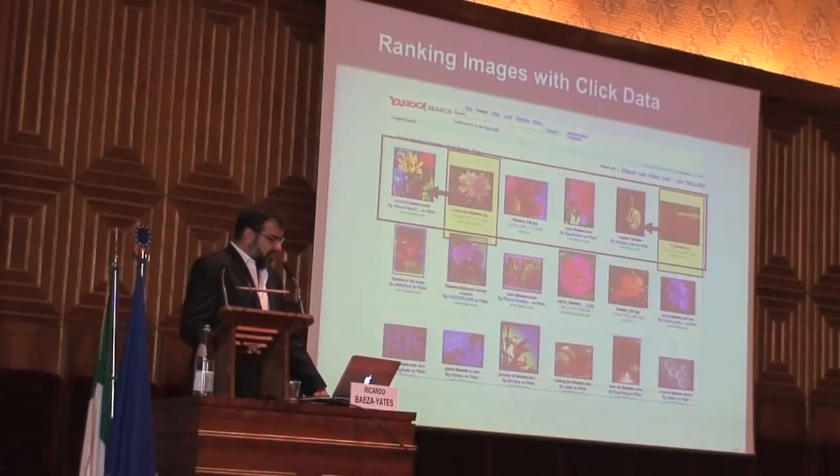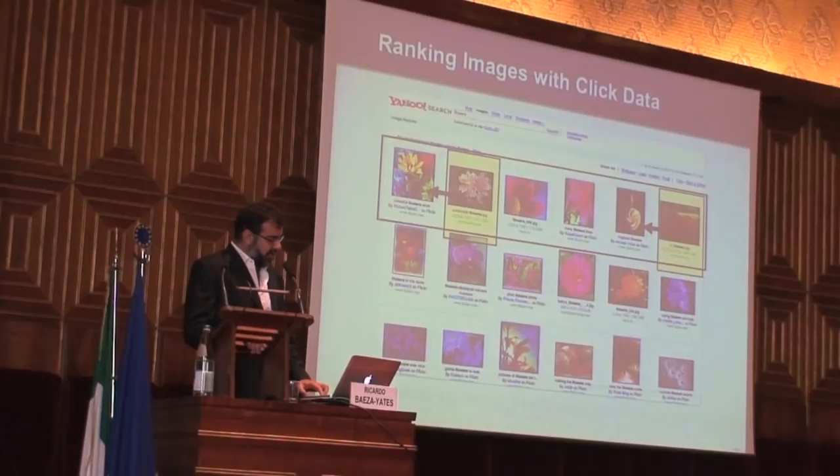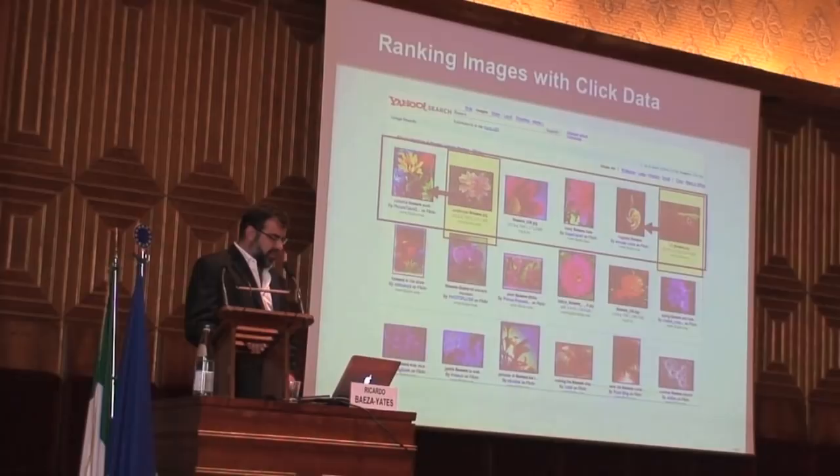The typical text search assumption would be that if a person clicks on this image, it's because that person didn't like the previous image. So they didn't click on the first result, they click on the second result — let's assume that the first was not relevant. The person clicked here, so let's assume these three are not relevant because the person is going left to right, top to bottom.